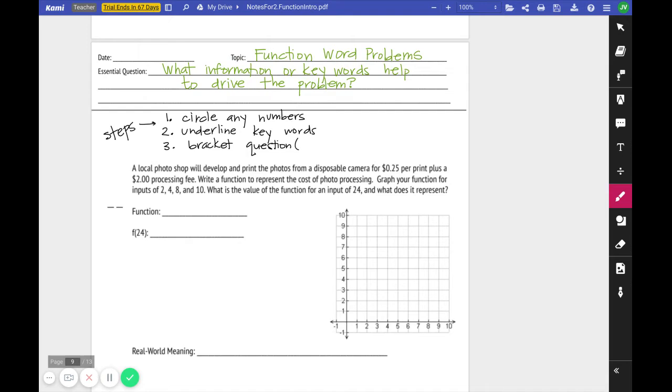Or bracket the questions. Okay. So here we go. I'm going to reread the problem and I'm going to do some of this work as I go. So a local photo shop will develop and print the photos for a disposable camera for $0.25 per print plus a $2 processing fee.